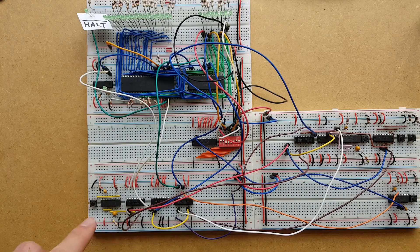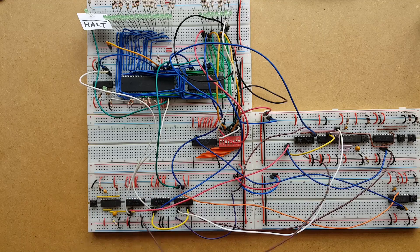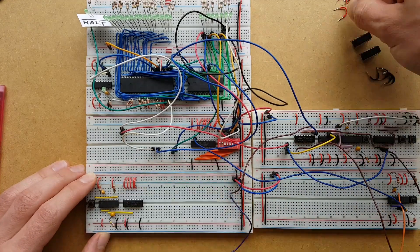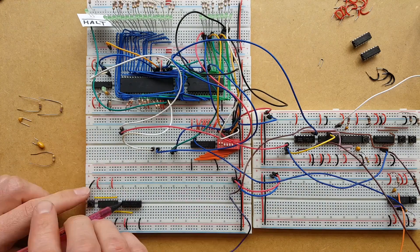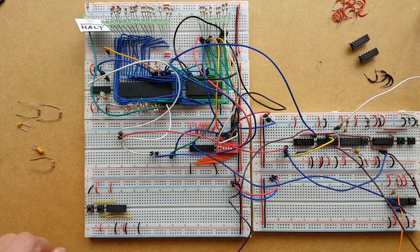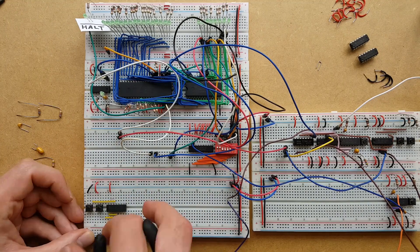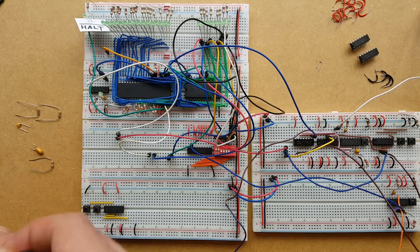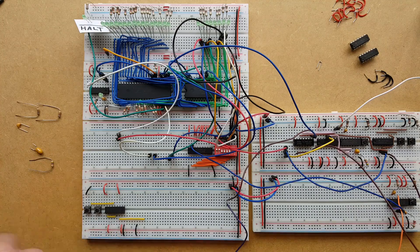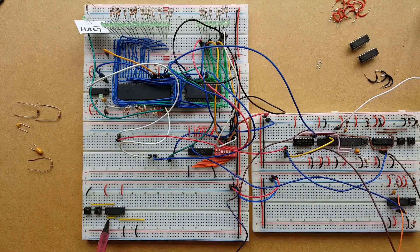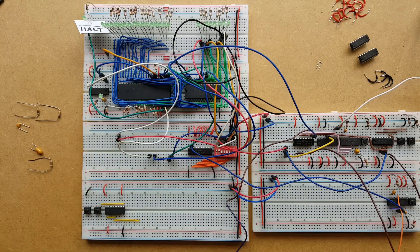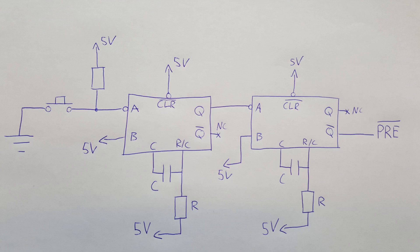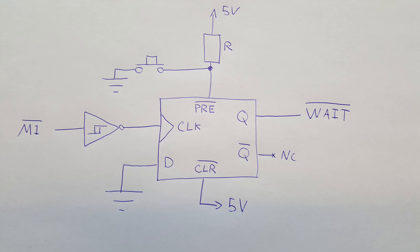That human man is going to start by making some space for the examine button. Just like the single step function, the examine function uses the same button debounce and flip-flop circuit as the examine next function.